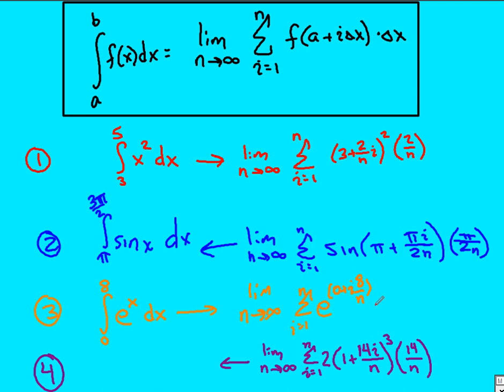And at the end, times delta x, so times another eight over n. That's it. If they wanted to rewrite it: limit n approaches infinity, the summation, this is going to be e to the 8i over n, all that times eight over n.